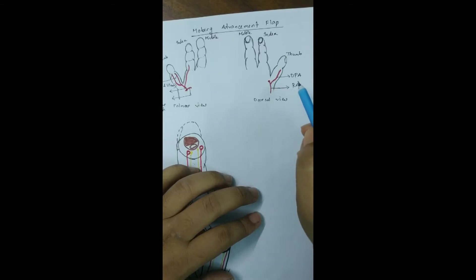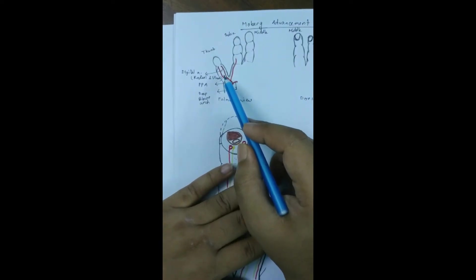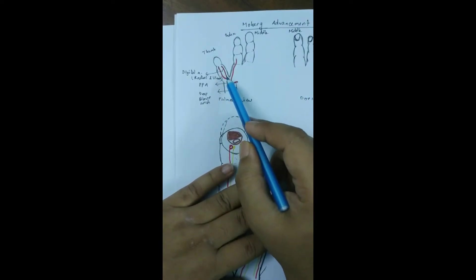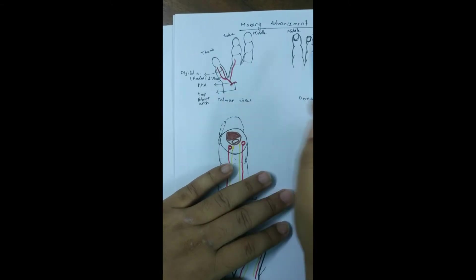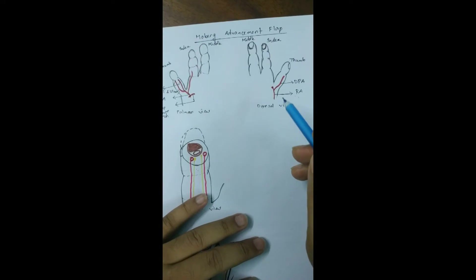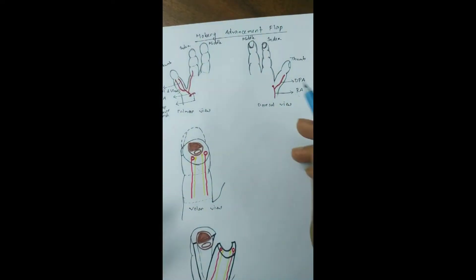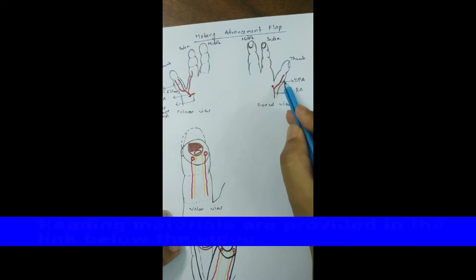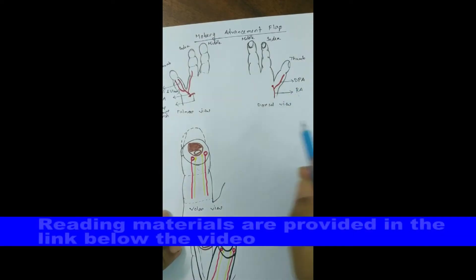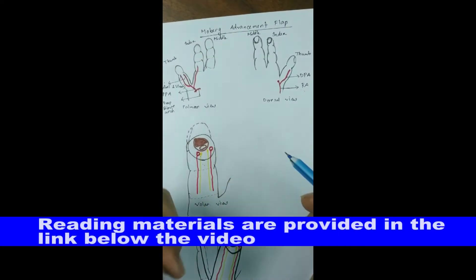When we raise the flap based on both digital arteries and sacrifice all the perforators to the dorsum of the thumb, the dorsum does not face any problem surviving because it has an independent blood supply from the dorsalis pollicis artery, which is lacking in all other fingers.